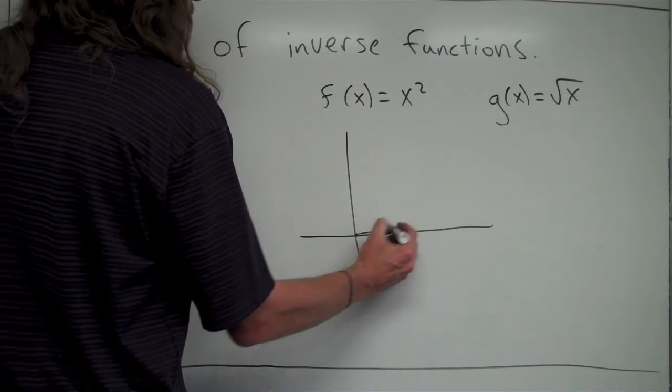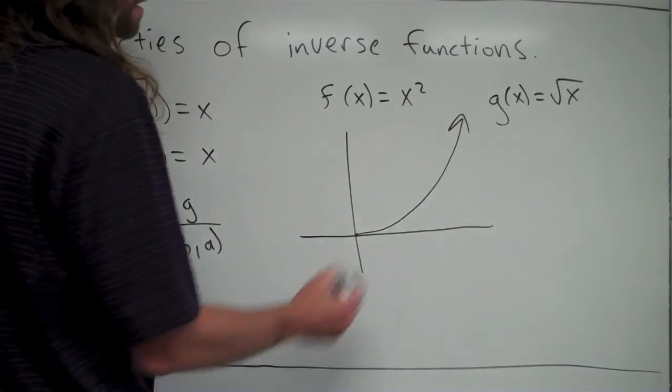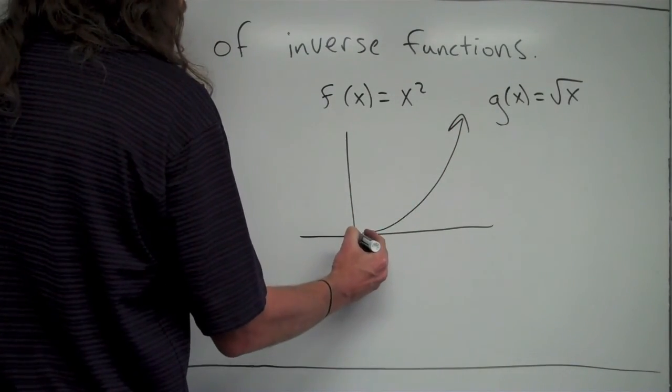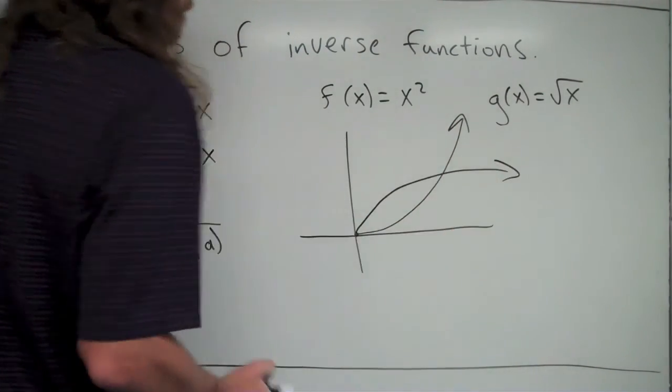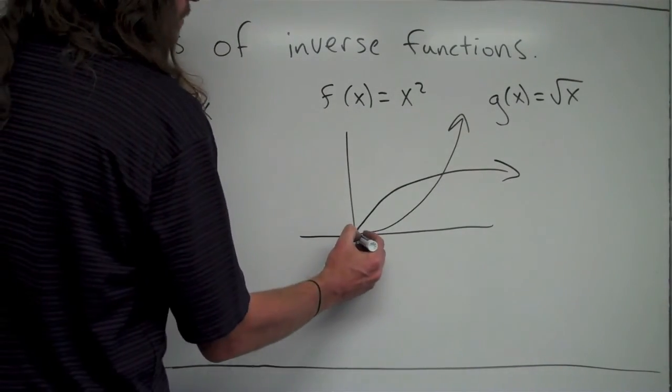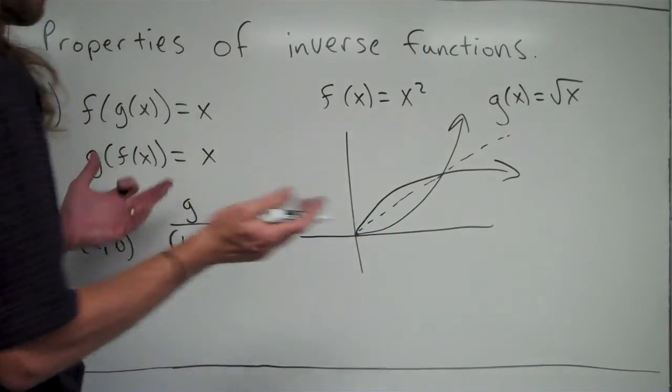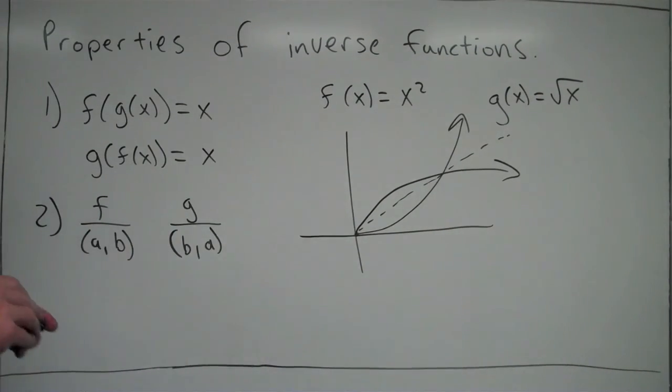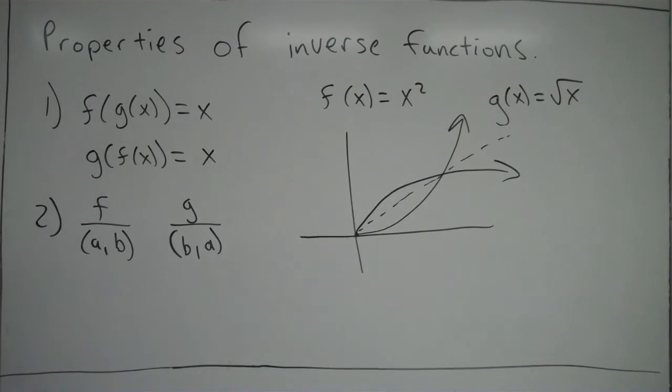So y equals x squared, if I just start from 0 and go out, it looks something kind of like that. Square root of x, if I start here, it looks like this. So you can see along the line y equals x, these are mirror images of one another.